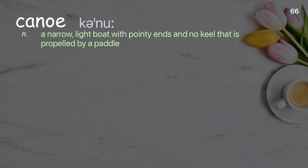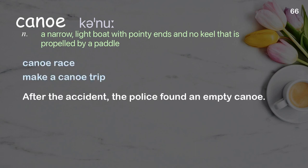Canoe: a narrow, light boat with pointy ends and no keel that is propelled by a paddle. Examples: canoe race, make a canoe trip. After the accident, the police found an empty canoe.